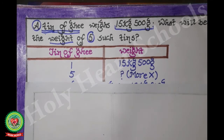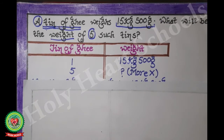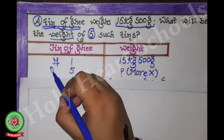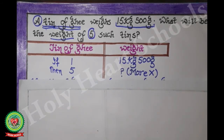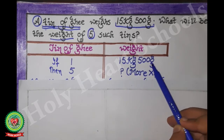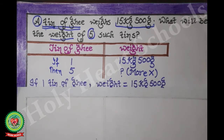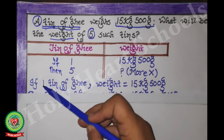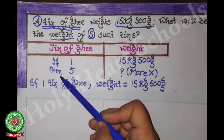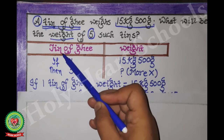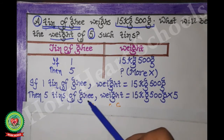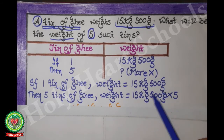We have to write down the statement also. The first statement is written with 'if' and the second with 'then'. If one tin of ghee weight is equal to 15 kilograms 500 grams, then five tins of ghee weight is equal to 15 kg 500 grams multiplied by 5.